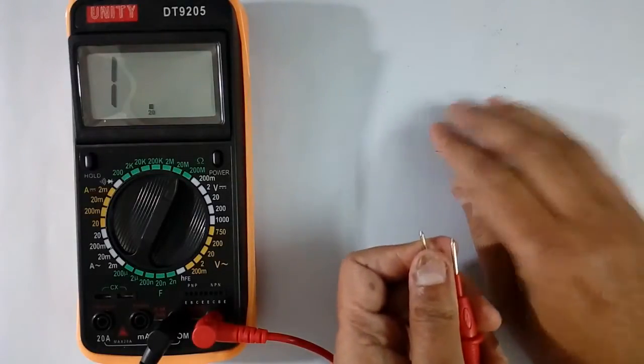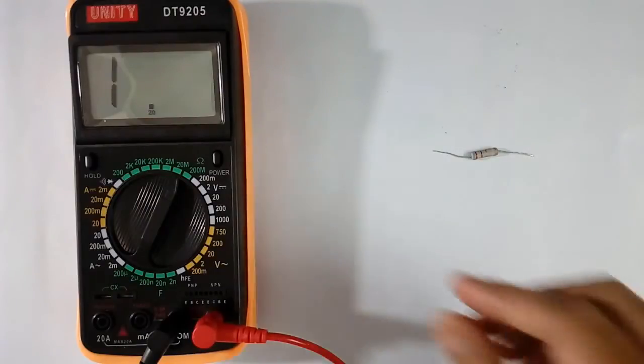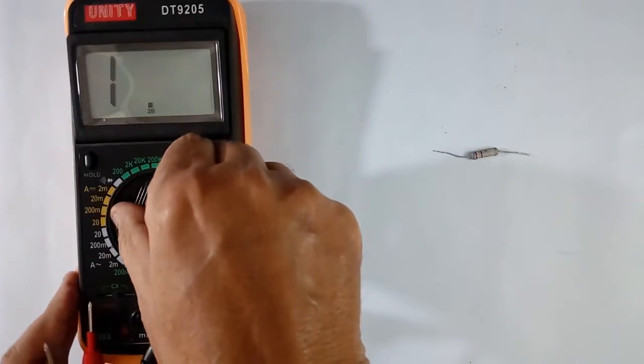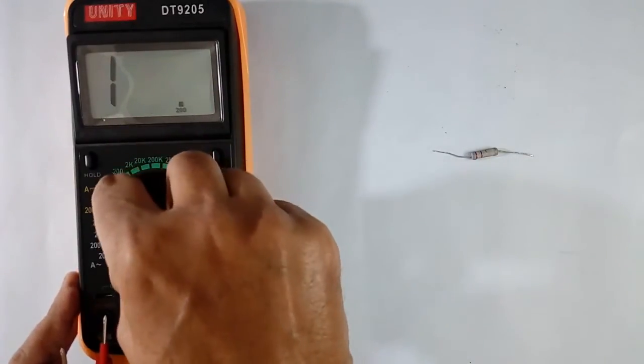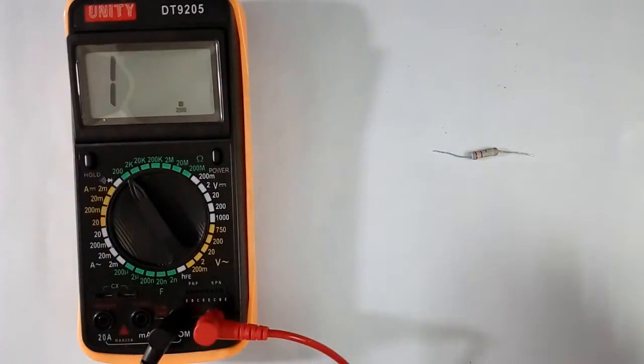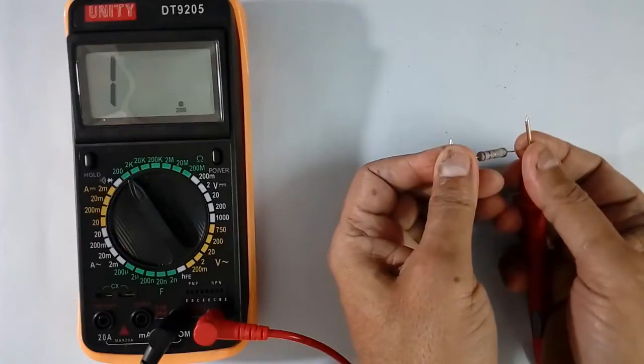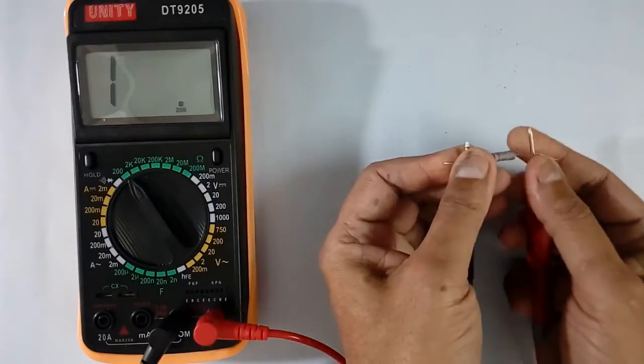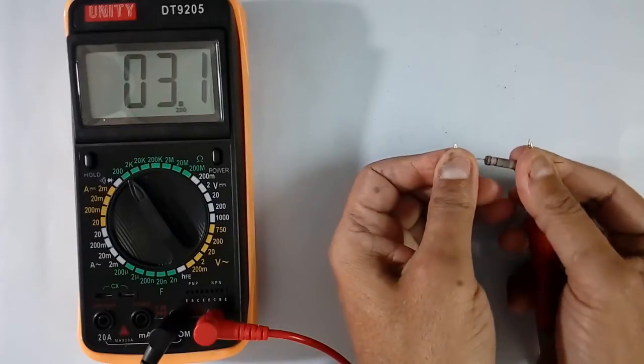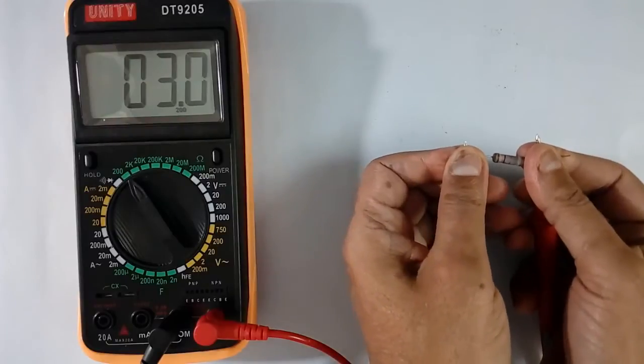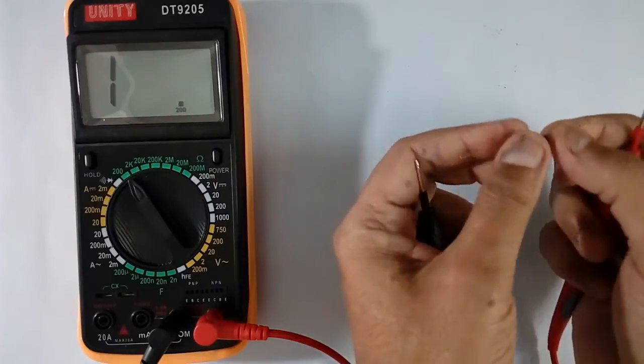Now we will see what is the problem with low value. This is 2 ohms. So I will keep scale of the multimeter at 200 ohms. That is the lowest value I have. Now I will measure again. It is showing 3 ohms. But before that.